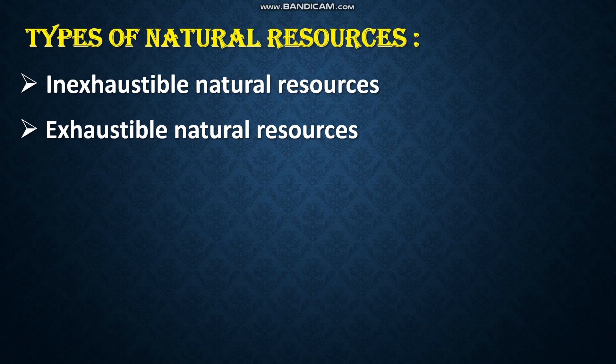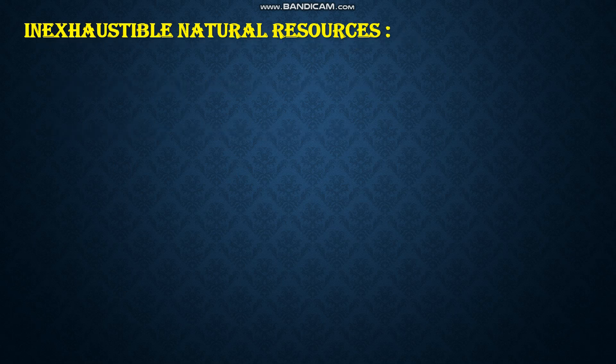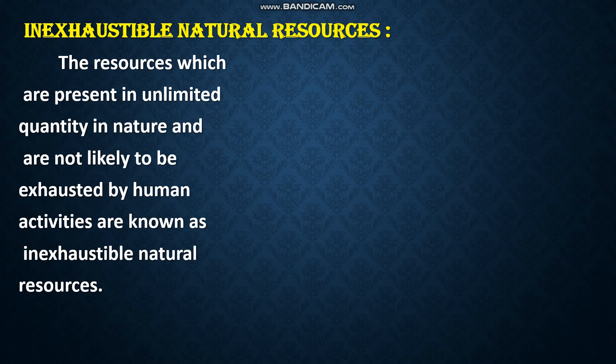Now, these natural resources can be classified into two types: inexhaustible natural resources and exhaustible natural resources. Inexhaustible natural resources are present in unlimited quantity in nature and are not likely to be exhausted by human activities. If you use them again and again, they will not get exhausted or finished.